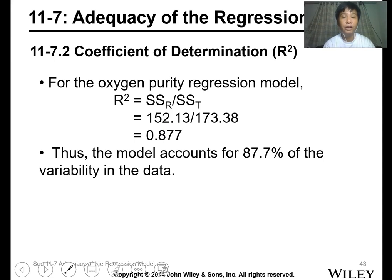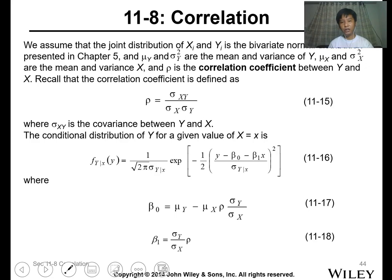So this model accounts for 87.7 percent of the variability in data. Now another coefficient or another correlation parameter that we can obtain from the regression analysis is the correlation. The correlation dictates how the model will work or how linear is your model or what is the behavior of your model.